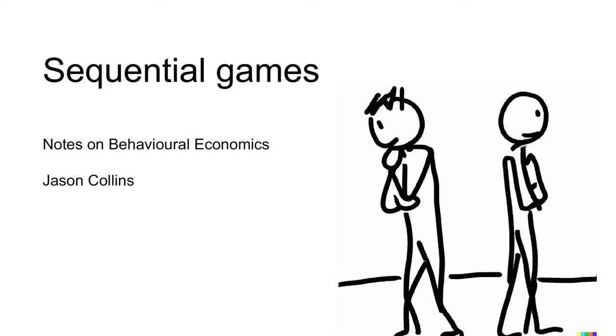Hi, I'm Jason. This video is on sequential games. In sequential games, players make sequential decisions knowing the action of the other player. Sequential games can be shown in what is called the extensive form representation. The extensive form representation explicitly shows the timing of play.